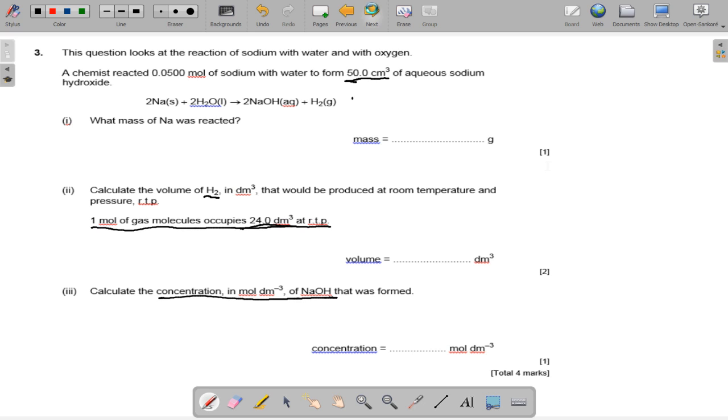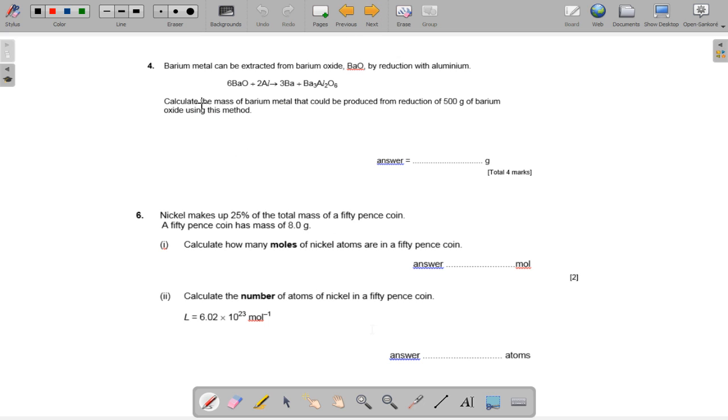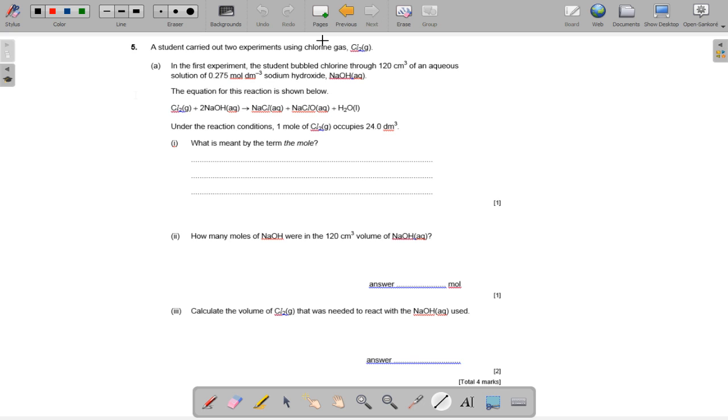Next couple of questions: Barium metal can be extracted from barium oxide, BaO, by reduction with aluminum. Calculate the mass of barium metal that can be reduced from the reduction of 500 grams of barium oxide using this method. Calculate how many moles in nickel per decimeter cubed of sodium hydroxide, and then we need to calculate the number of atoms using Avogadro's constant, 6.02 times 10 to the 23rd. And finally, this one.